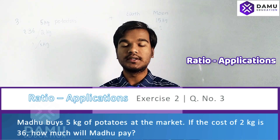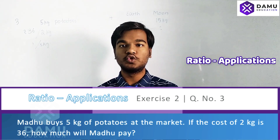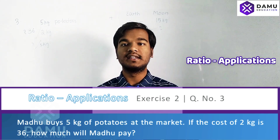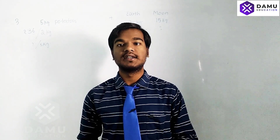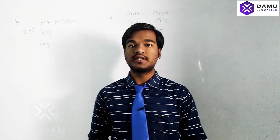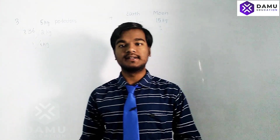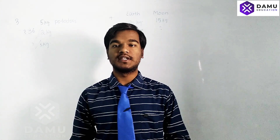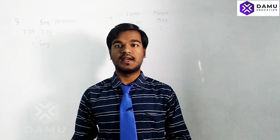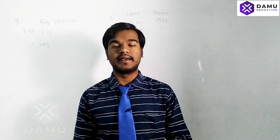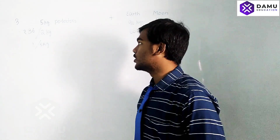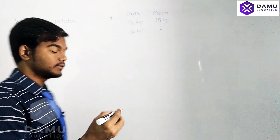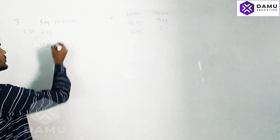So here we are having two methods. One method is the unitary method, and another one is the proportionate method. I will try to solve all the methods for this type of question — please follow that for the next exercise also. So the first method is the proportionate method.